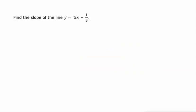This says, what is the slope of this line? The slope is the number that's being multiplied by x. So it's just that negative 5 right there. It's that simple.